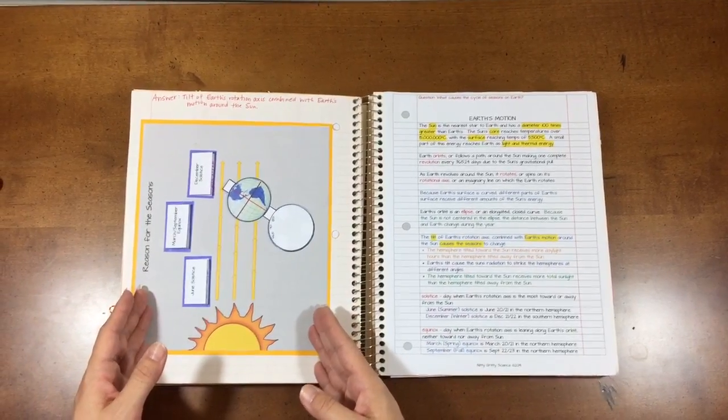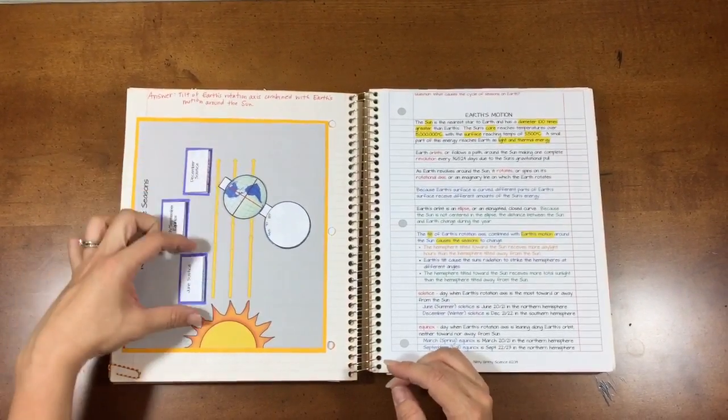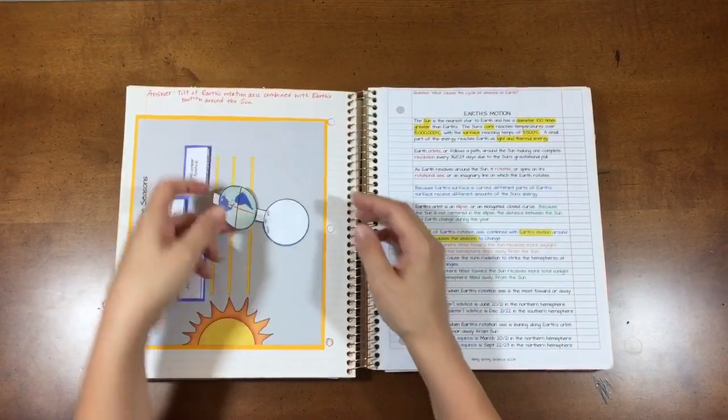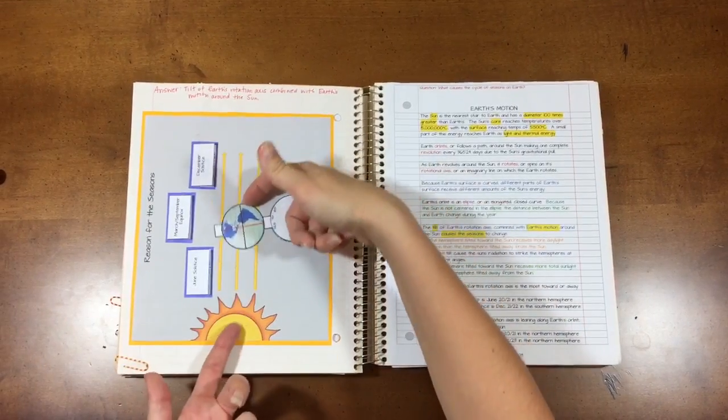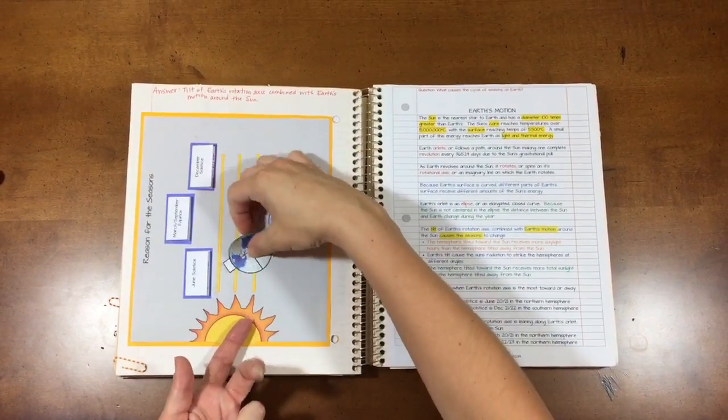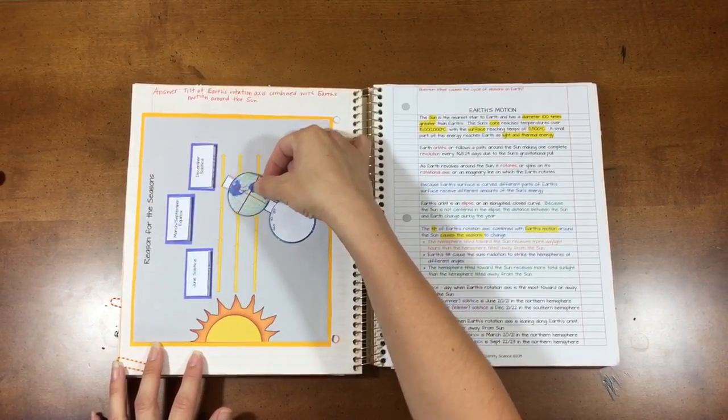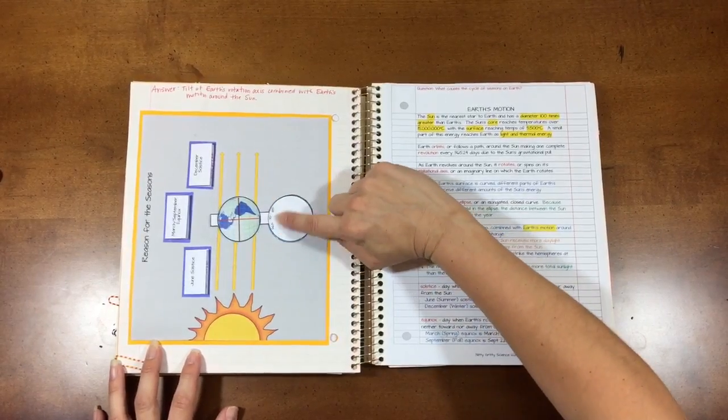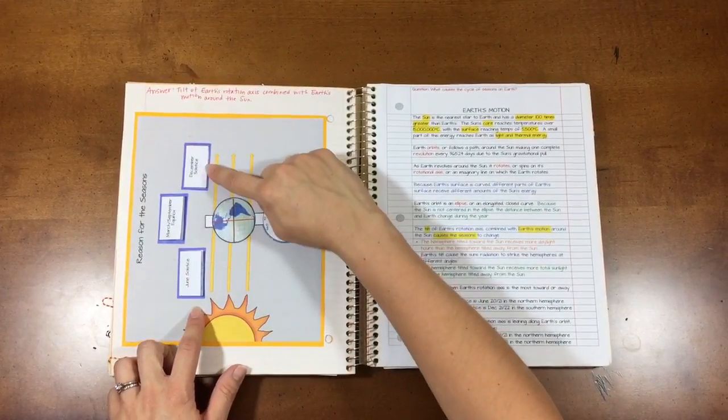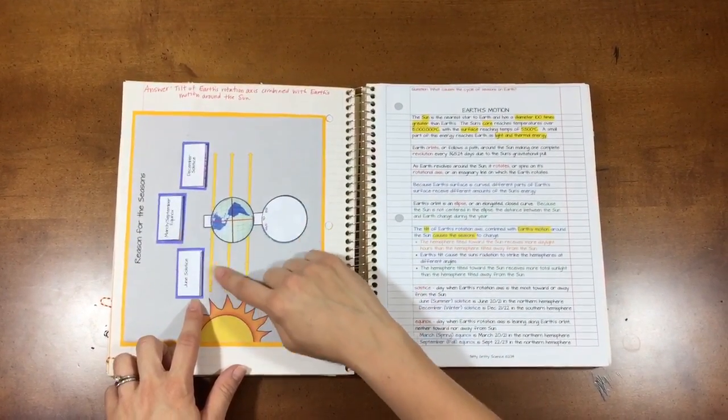The student printables again are included for this and they get the individual tabs. This is all a cutout and the instructions are all included on how to make this manipulative right here. They're going to have to decide based on the angle where the June and December and the Equinox labels go.